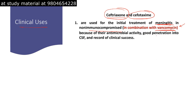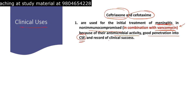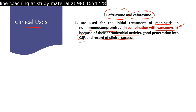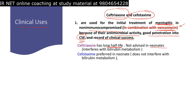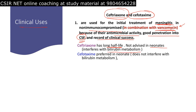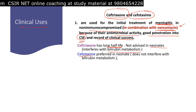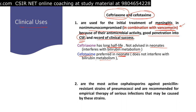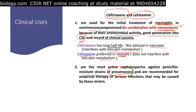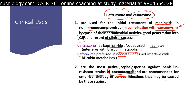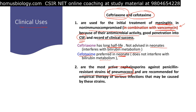Ceftriaxone and cefotaxime have good antimicrobial activity, good penetration into the cerebrospinal fluid, and a strong record of clinical success for meningitis. However, ceftriaxone has a longer half-life and is not advised in neonates because it interferes with bilirubin metabolism and can cause severe jaundice. Cefotaxime is preferred in neonates as it does not interfere with bilirubin metabolism.